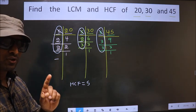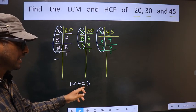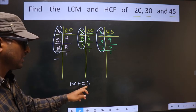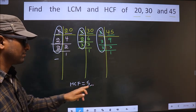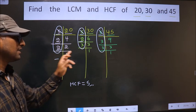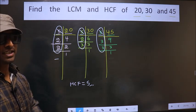Therefore, only one number 5 is present in all the 3 places. So it is our HCF. I repeat, only one number 5 is present in all the 3 places. So this is our HCF.